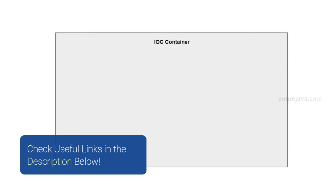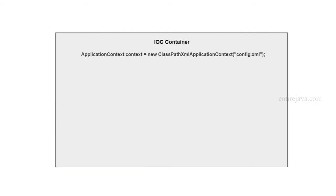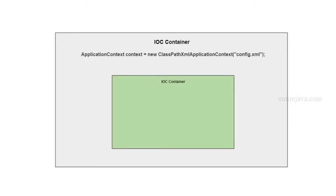The instruction that is going to help us create this IOC container is one we had in our main class. What this instruction does is parse through all the beans defined in our XML document and make them part of an IOC container. This instruction will not only create the IOC container but also instantiate all the beans defined in the XML. In our case, we had a couple of beans defined — animal and bean. Spring will also take care of creating connections between these beans; we are injecting the animal object into bean, so the bean depends on animal and is injected.